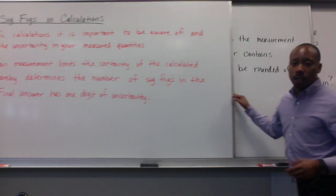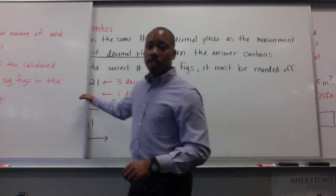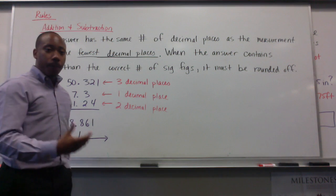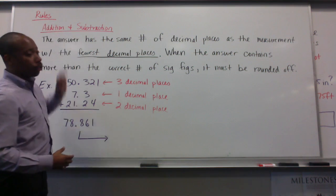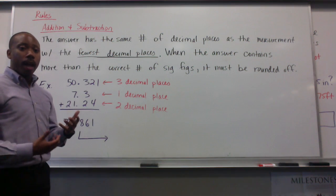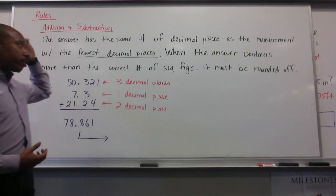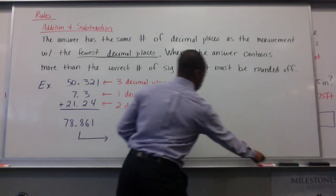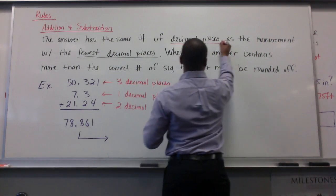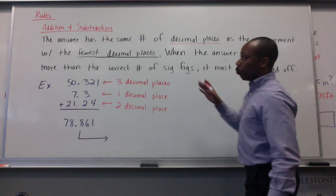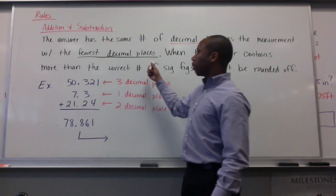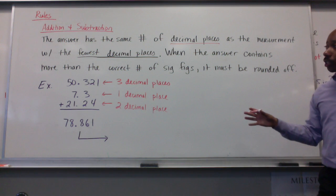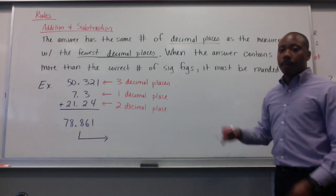When accounting for significant figures in your calculations, there are some rules. The rules differ depending on what operations you are doing. For addition and subtraction, we abide by this rule: the answer has the same number of decimal places as the measurement with the fewest decimal places. When the answer contains more than the correct number of significant figures, it must be rounded off.